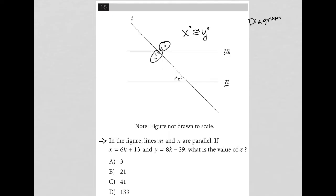The question says in the figure, lines m and n are parallel. So they actually are parallel, which means that y plus z equals 180 because same side interior angles are supplementary. The question asks: if x equals 6k plus 13 and y equals 8k minus 29, what is the value of z?